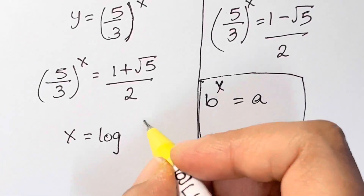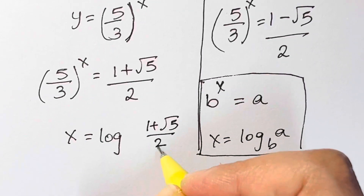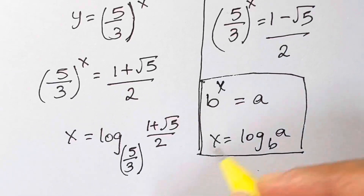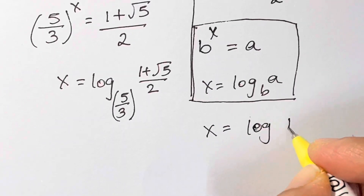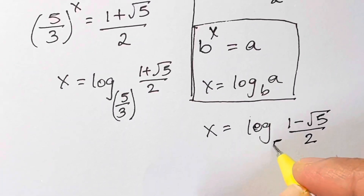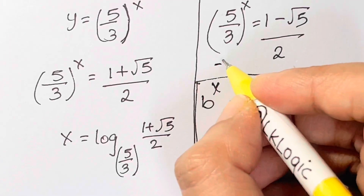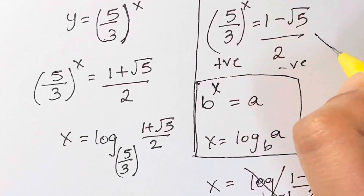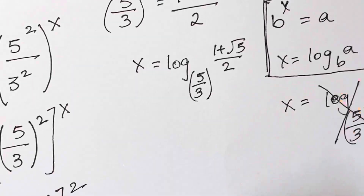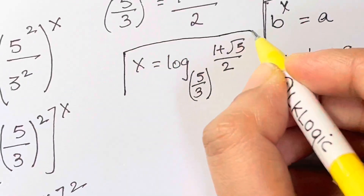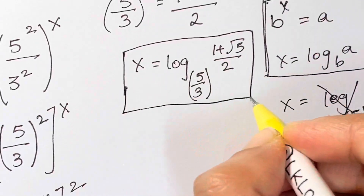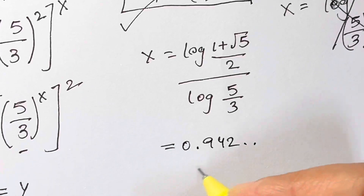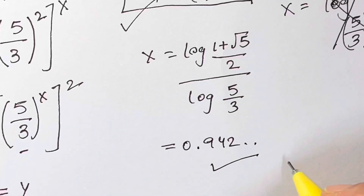This gives x = log base (5/3) of (1 + √5)/2, or x = log base (5/3) of (1 − √5)/2. The second solution is not applicable because (1 − √5)/2 is negative, and a positive base raised to any real power cannot be negative. Therefore, x = log((1 + √5)/2) divided by log(5/3), which equals approximately 0.942.